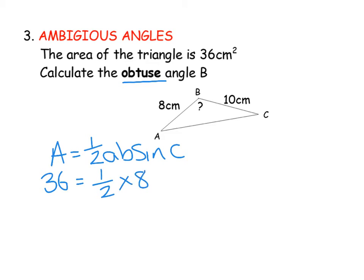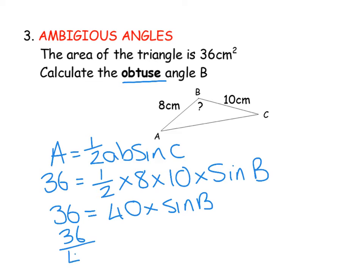I know my area is 36. I know my sides are 8 and 10. And I don't know what sine C is, although in this case it's sine B, so I'm going to change it to sine B. Let's tidy this up a bit. That gives us 40 times sine B. We need to divide by that 40 to counteract the times. So you've got 36 over 40 equals sine B.